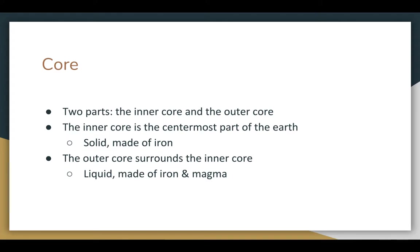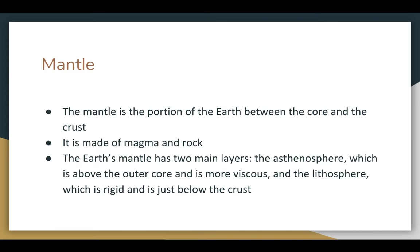The inner core is the centermost part of the Earth, and it is totally solid because of all of the pressure acting on it, and it's made of iron. The outer core surrounds the inner core, and it is liquid, and it's made up of a combination of iron and magma. One layer up from the core we have the mantle, which is the portion of the Earth in between the core and the crust.